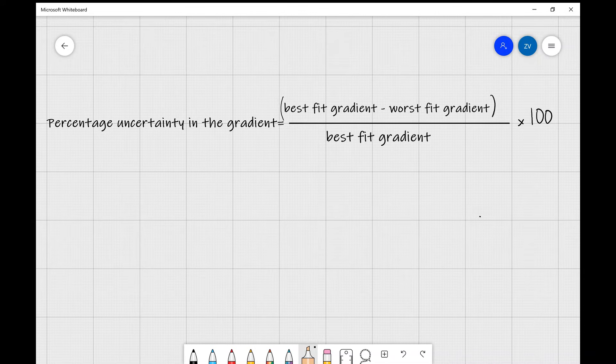Just a little note, a very typical mistake I've noticed when marking papers is that sometimes students might write that the uncertainty in the gradient is the line of best fit minus the line of worst fit. We need to be a little bit more specific than that and say precisely that it's the best fit gradient minus the worst fit gradient over the best fit gradient times 100.